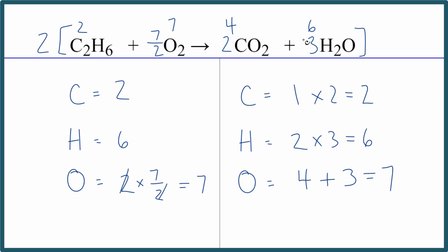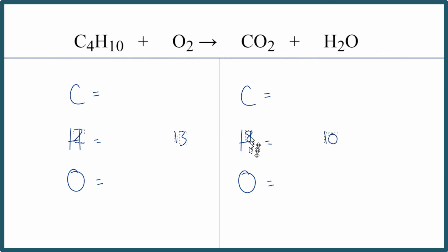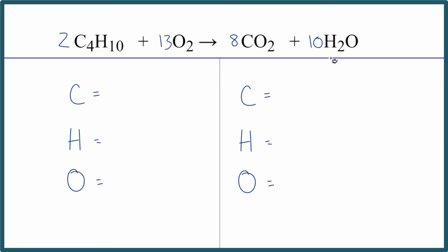Pause and give the next combustion equation a try — use fractions and do the oxygens last. You should end up with coefficients of two, thirteen, eight, and ten. Both the fractional and whole-number versions are correct since we care about the ratio. That covers the main types of chemical equations you'll need to balance. This is Dr. B with how to balance chemical equations — thanks for watching.